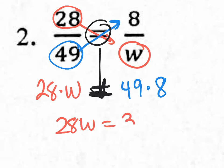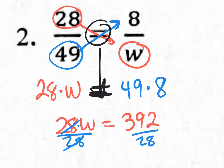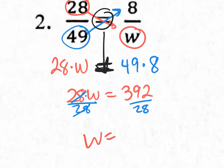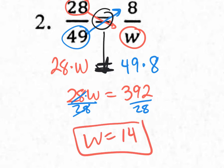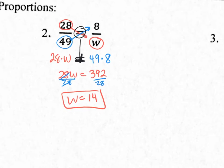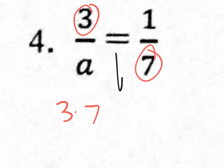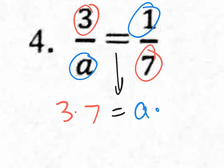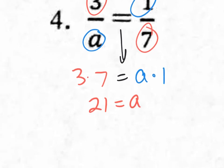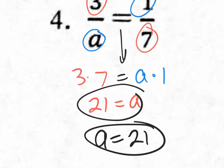Divide both sides by 28: W equals 14. Use the calculator. For number 4, it's even easier. Cross-multiply: 3 times 7 equals A times 1. Three times 7 is 21, and A times 1 is just A. So A equals 21.